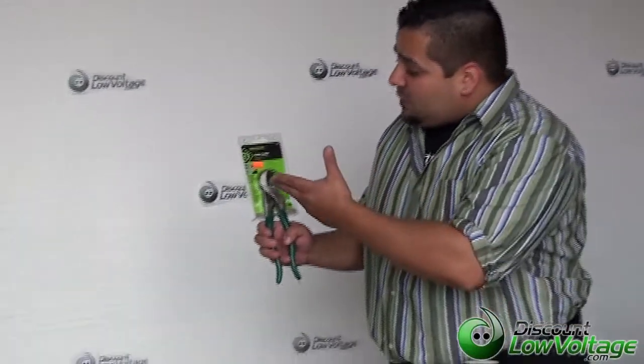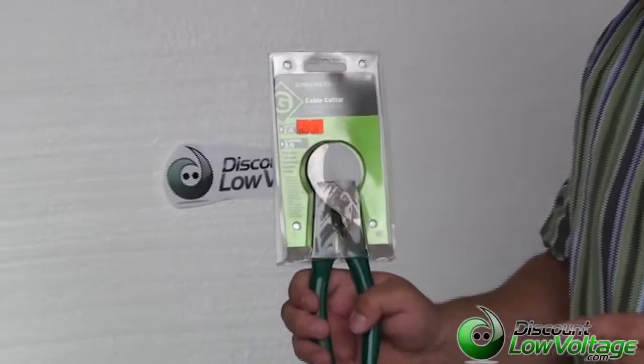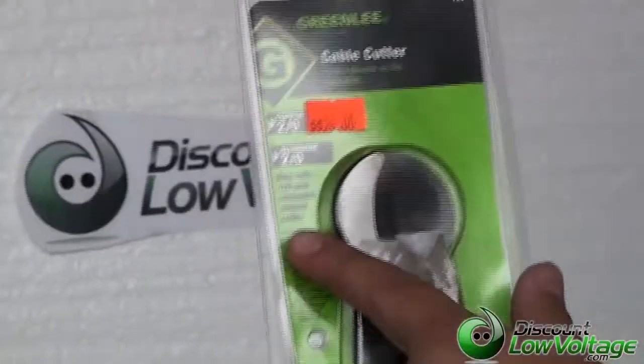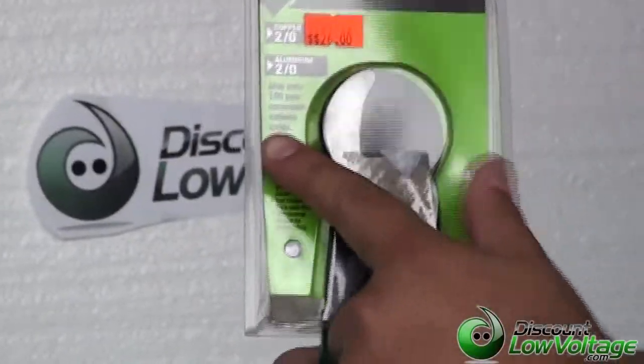We also have a Greenlee cable cutter, it's part number 727 and it does mention on here that it also cuts 100 pair communications cable.